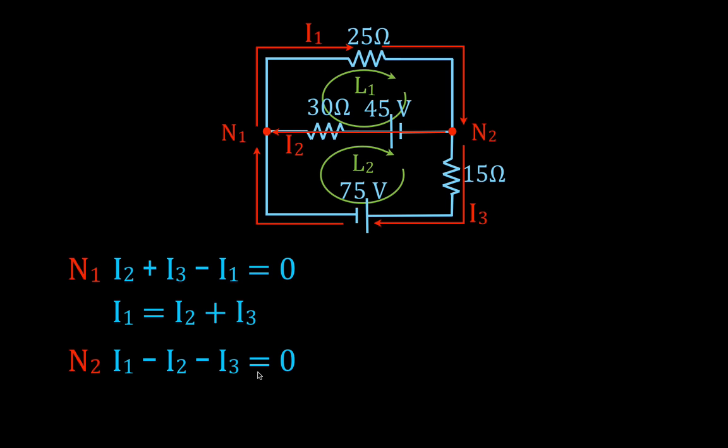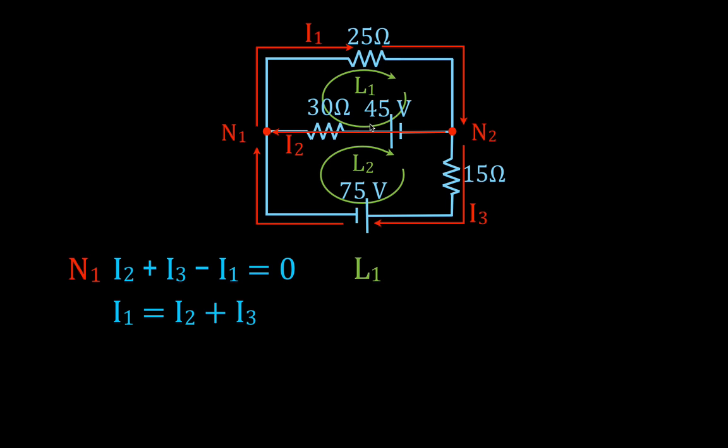When we get the same equation at different nodes, we only need one of those equations — we won't use the same equation twice. So we'll just keep the one equation: I1 equals I2 plus I3. Now we're going to apply the voltage rule at loop number one and loop number two, using Kirchhoff's voltage law together with Ohm's law.